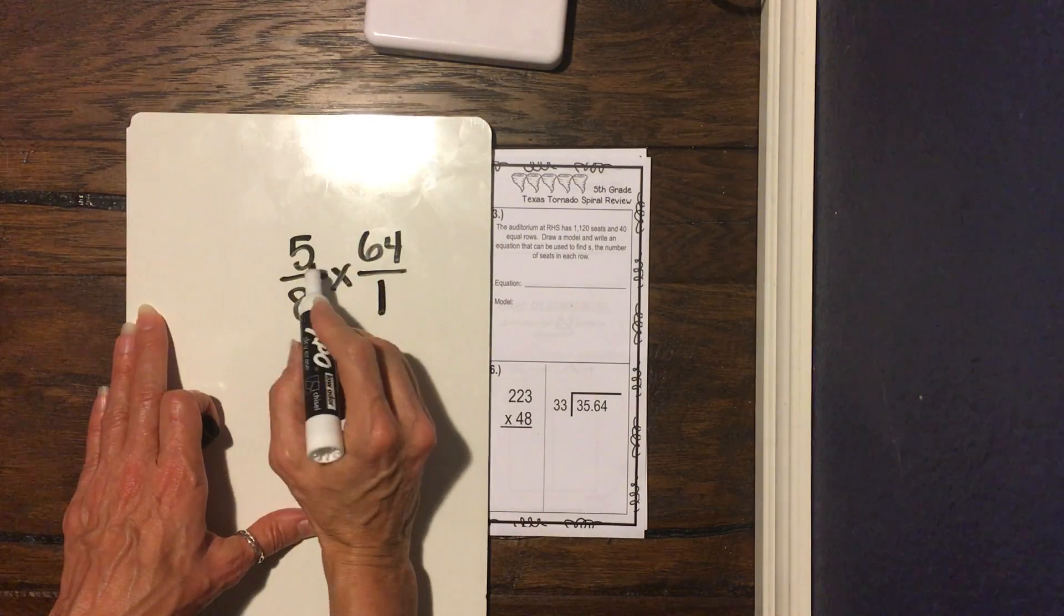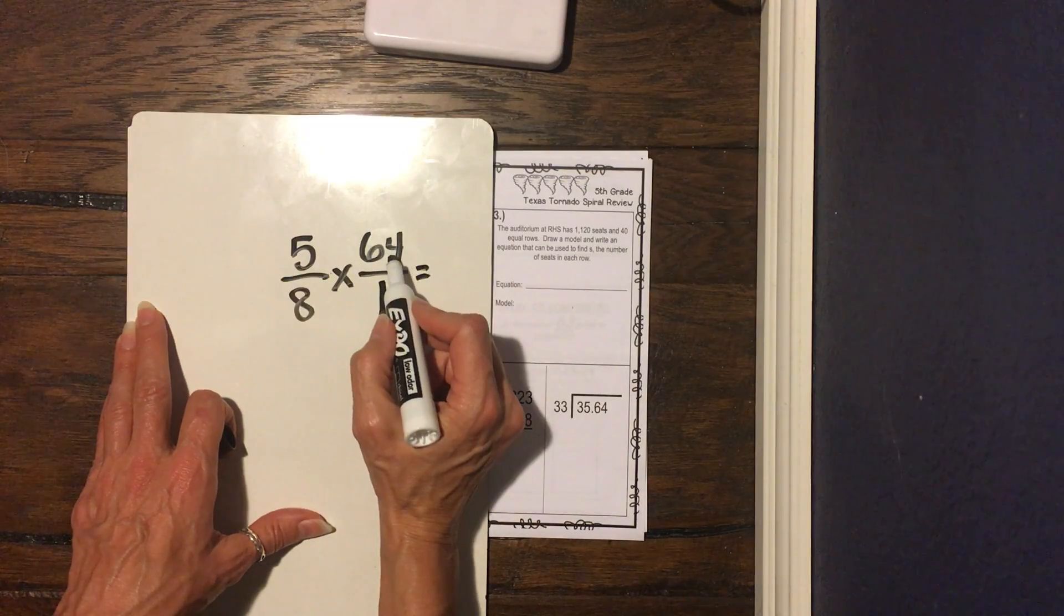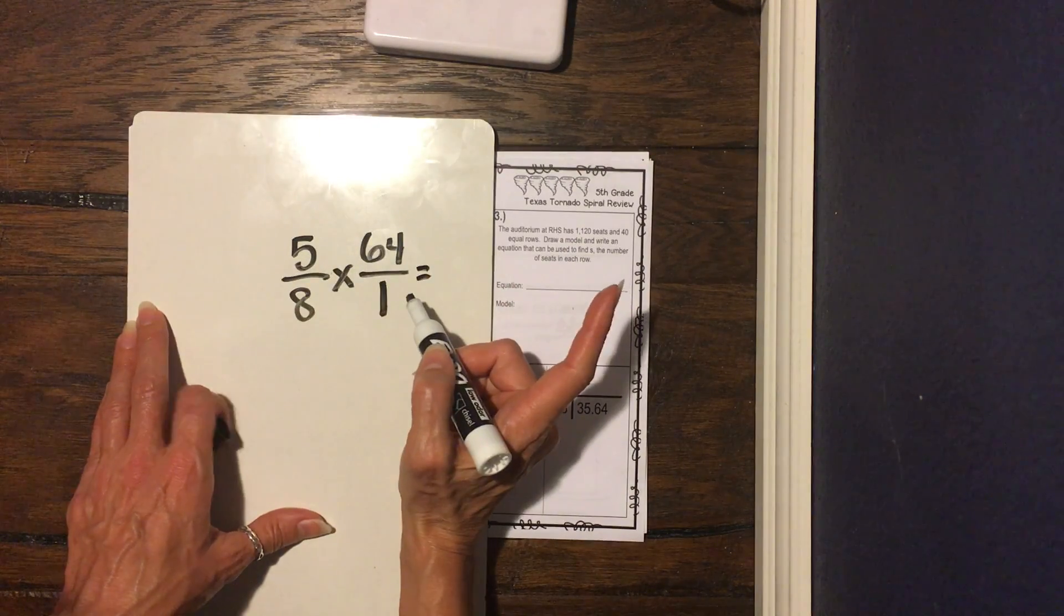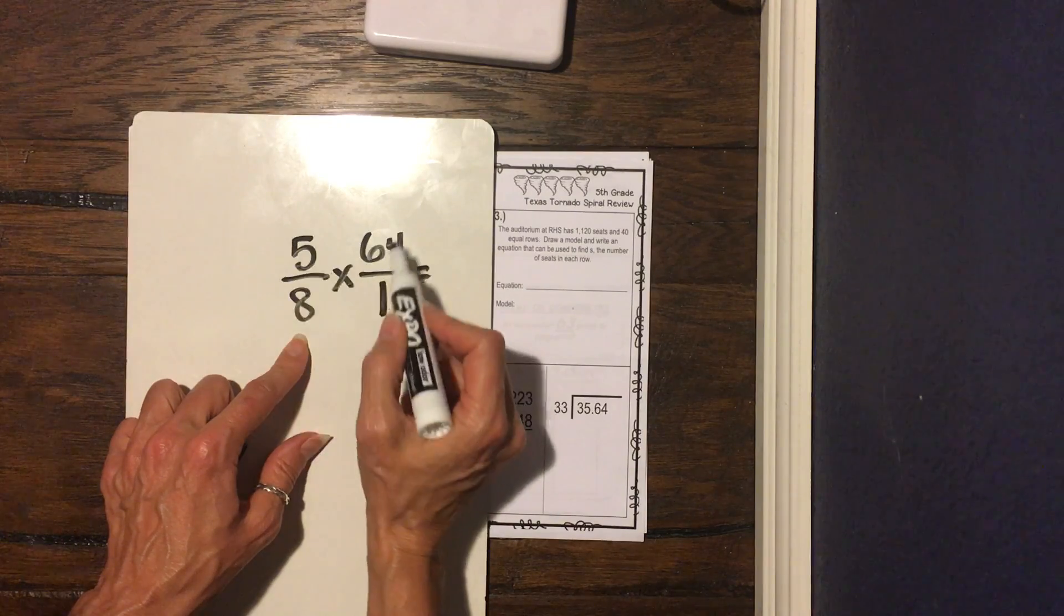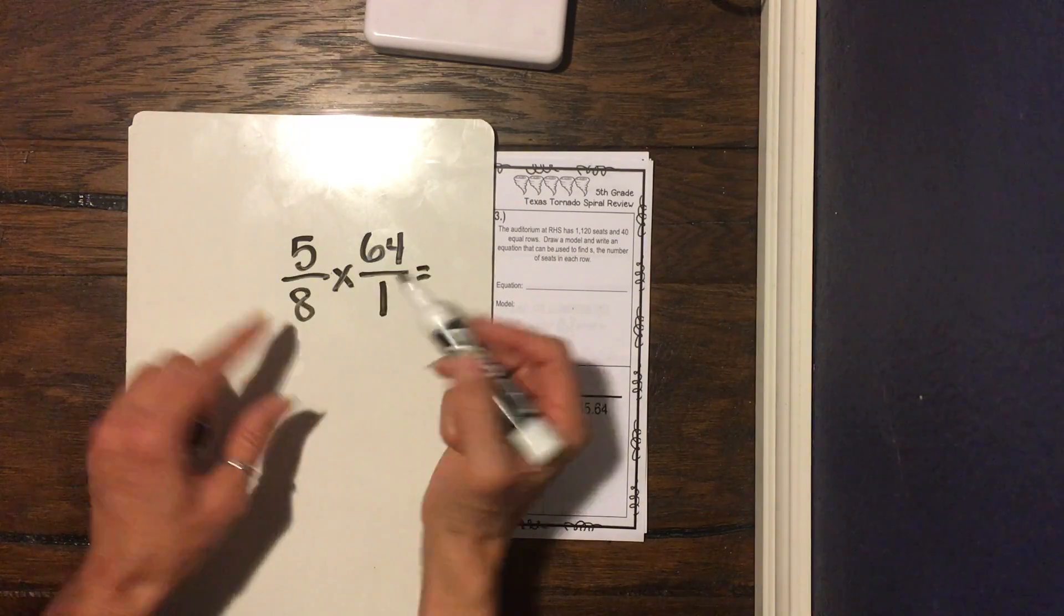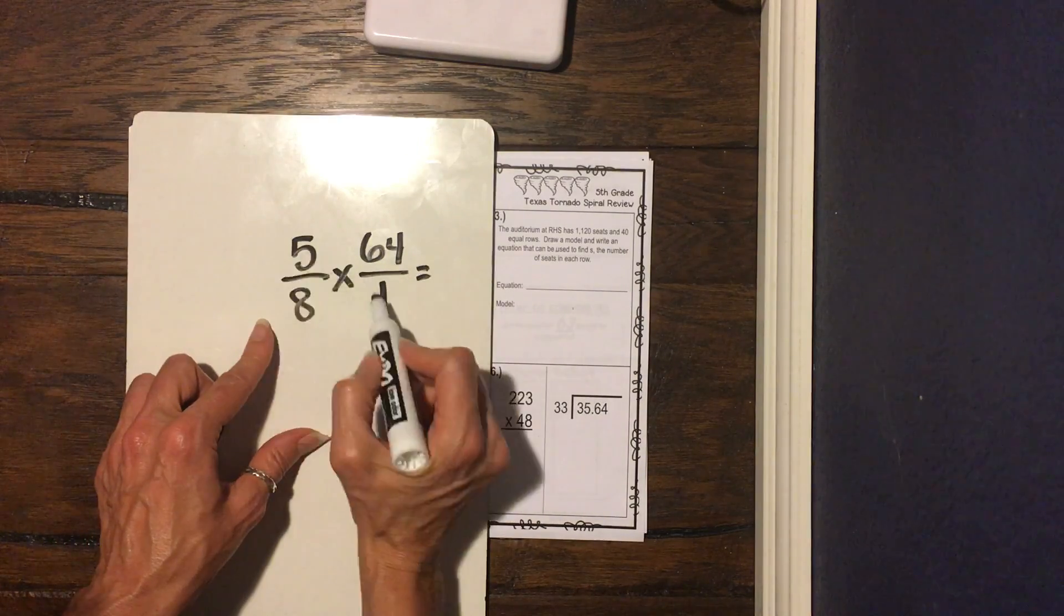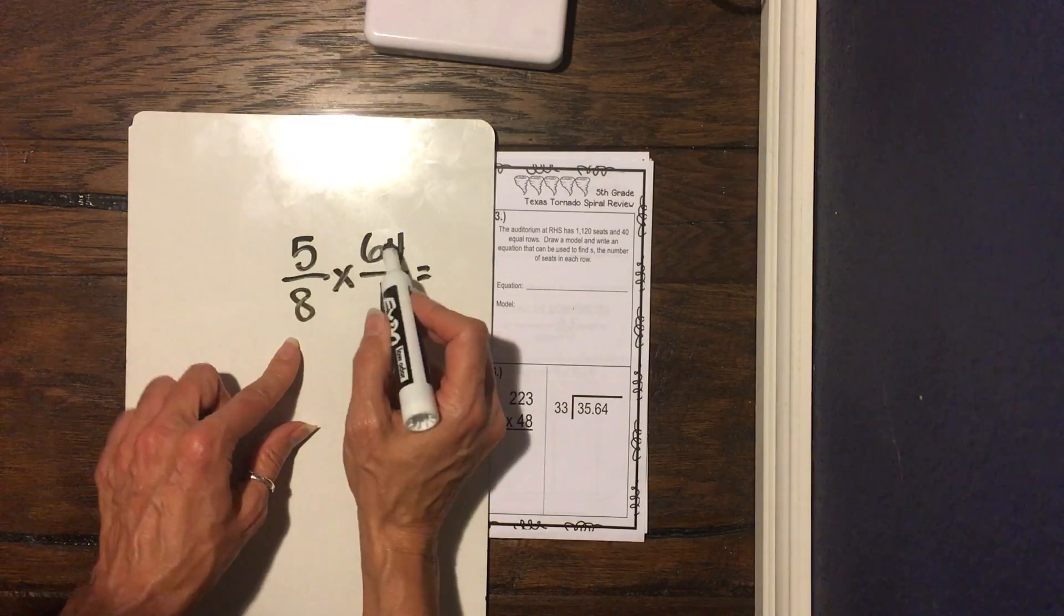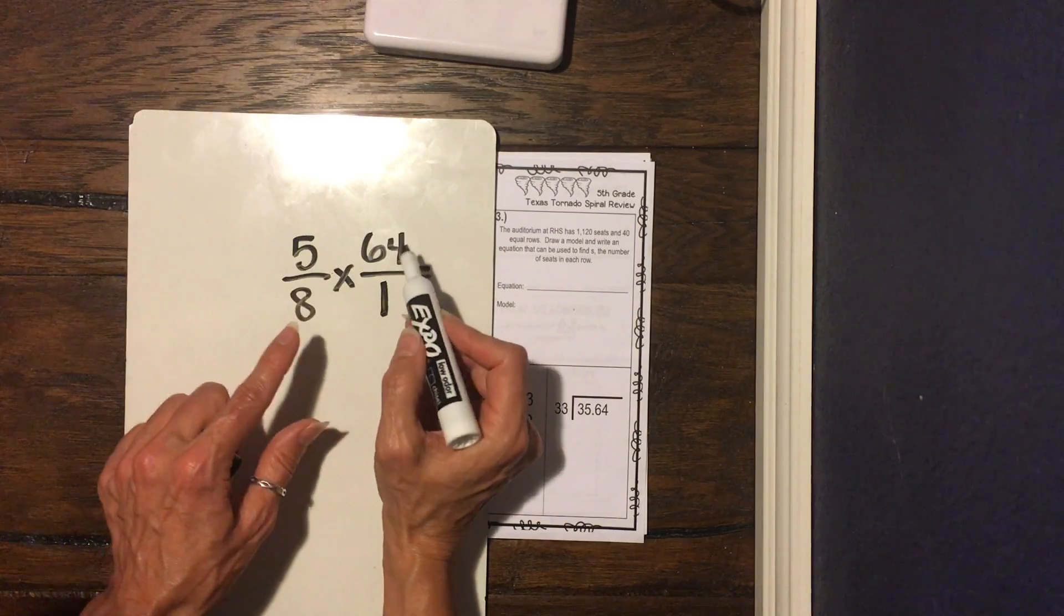And that way we're essentially multiplying fractions. When we multiply fractions, we multiply straight across, but guys, this is a pretty big number. So we can absolutely multiply 64 times five, or we can do what I taught you guys. We can look diagonally and ask ourselves, is there any way that we can cross-reduce? Can we simplify diagonally?